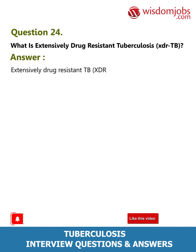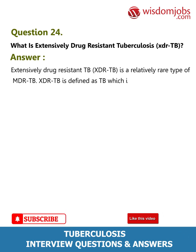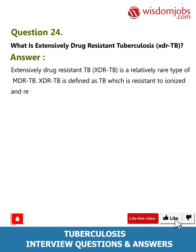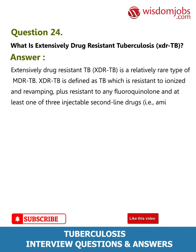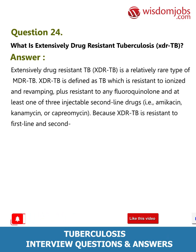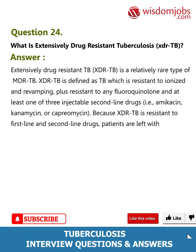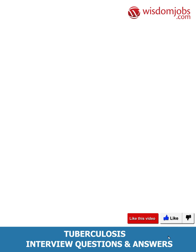Question 24: What is extensively drug resistant tuberculosis (XDR-TB)? Answer: XDR-TB is a relatively rare type of MDR-TB. XDR-TB is defined as TB which is resistant to isoniazid and rifampin, plus resistant to any fluoroquinolone and at least one of three injectable second-line drugs — amikacin, kanamycin, or capreomycin. Because XDR-TB is resistant to first-line and second-line drugs, patients are left with treatment options that are much less effective and may require prolonged treatment.